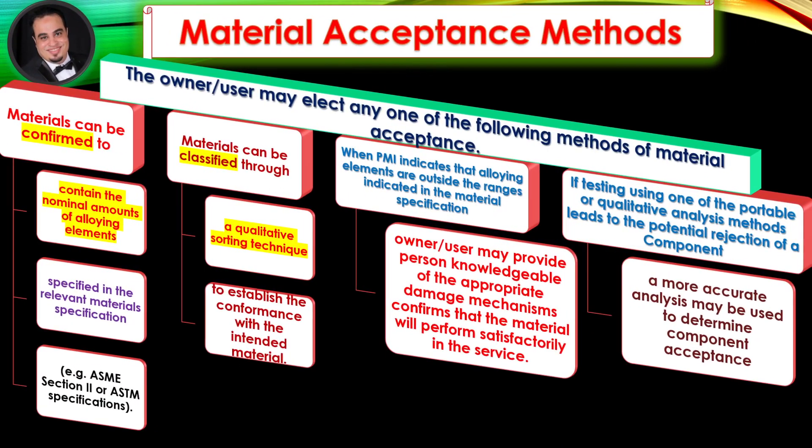Material Acceptance Methods: The owner-user may elect any one of the following methods of material acceptance. Materials can be confirmed to contain the nominal amounts of alloying elements specified in the relevant materials specification, for example ASME Section 2 or ASTM specifications.